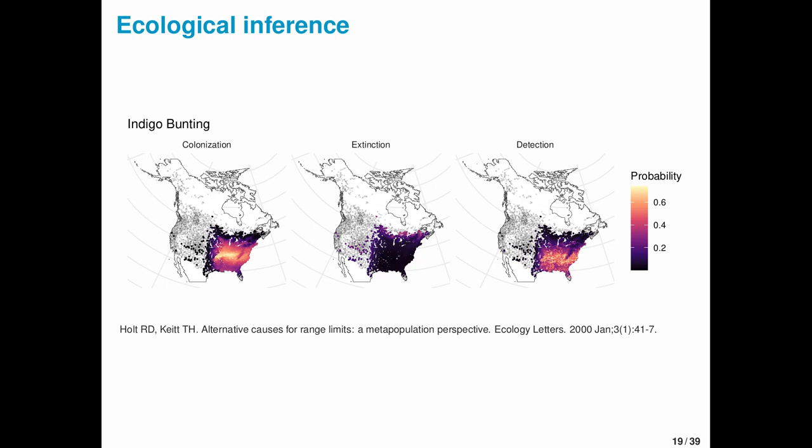Because we're estimating parameters we actually care about, we can make inference about range boundaries. So one theoretical expectation that we have is that range boundaries exist because of gradients in colonization and extinction. For most species, the data seems to be consistent with this theoretical expectation: colonization is low at the range boundary and extinction is high. The nice thing here is we're estimating these dynamics while accounting for imperfect detection.